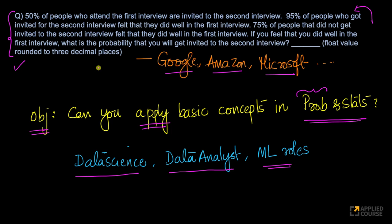Now let's see what this question is. The question says: 50% of the people who attend the first interview are invited to the second interview. 95% of the people who got invited for the second interview felt that they did well in the first interview. 75% of people that did not get invited for the second interview felt that they did well in the first interview. If you feel that you did well in the first interview, what is the probability that you'll get invited to the second interview?